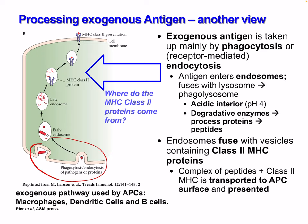Exogenous antigen is taken up by phagocytosis, endocytosis, or receptor-mediated endocytosis. The antigen enters the endosome — here's our early endosome — and fuses with the lysosome, forming our phagolysosome. Again, we have an acidic interior at pH 4, and the proteolytic enzymes process the protein into peptides. This endosome fuses with vesicles containing the class 2 MHC protein, and this complex of peptides and class 2 MHC is transported to the surface.